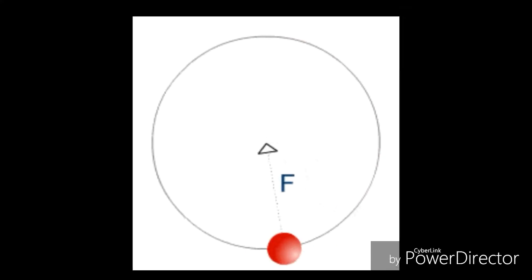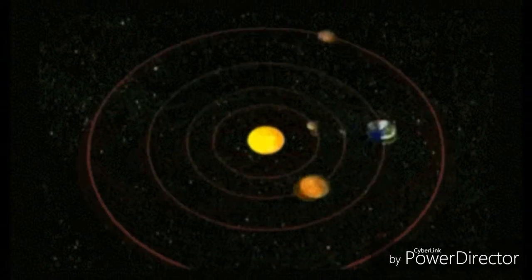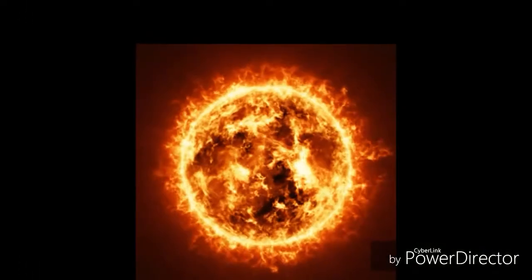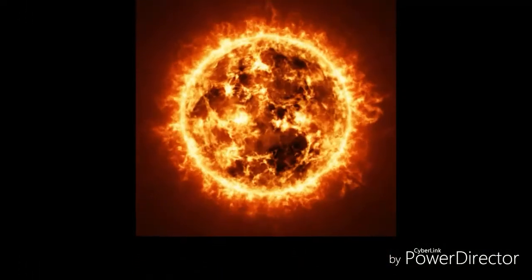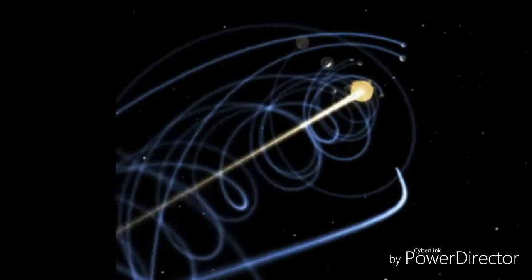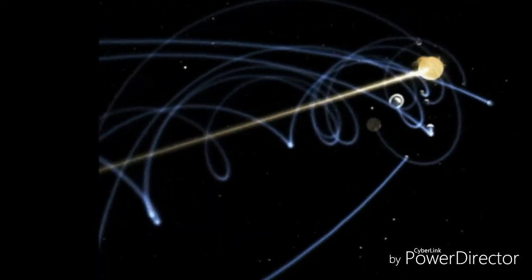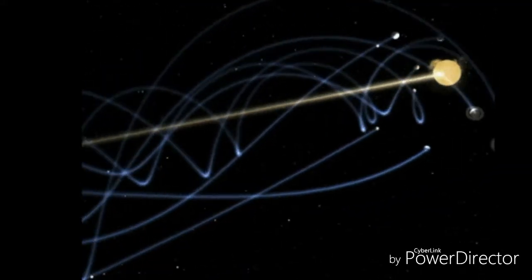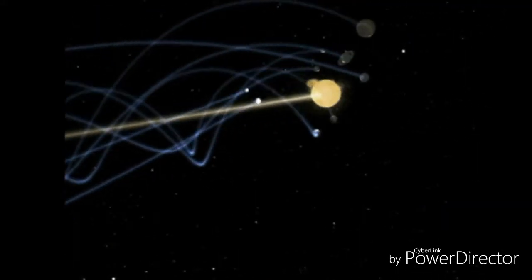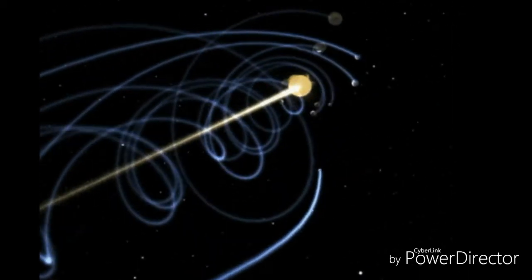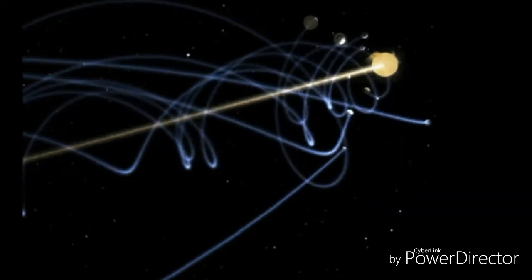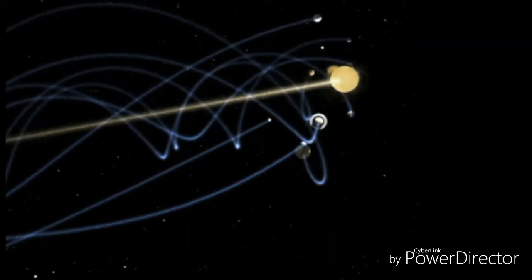The source for the centripetal force in the solar system is the gravitational force of the sun. Without the centripetal force from the sun, the planets would travel in a straight line. Similar to the bucket of water tied to a rope, the velocity of the planets is high enough so that they continuously accelerate towards the sun without ever leaving their orbits. It is for this reason that the planets do not fall into the sun from its strong gravitational force of attraction.